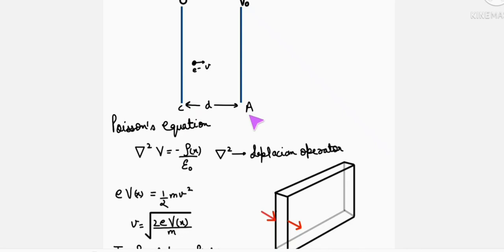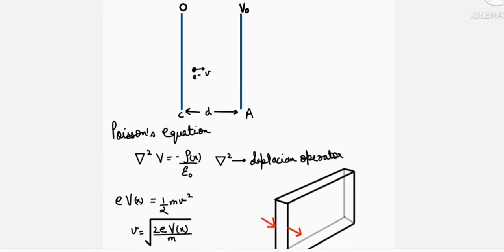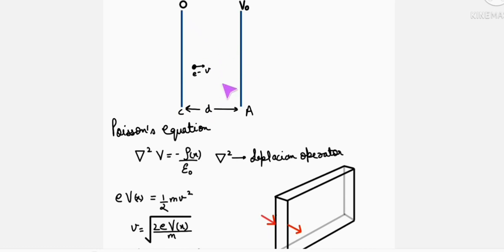You can also prove using Poisson's equation that del square V equals minus rho by epsilon naught. When rho is 0, del square V equals 0, which is the Laplace equation. Solving this, you get potential as a function of X equal to V0 D by X. Now, in this case space charge is present, so definitely rho will not be equal to 0, so here V is something else.